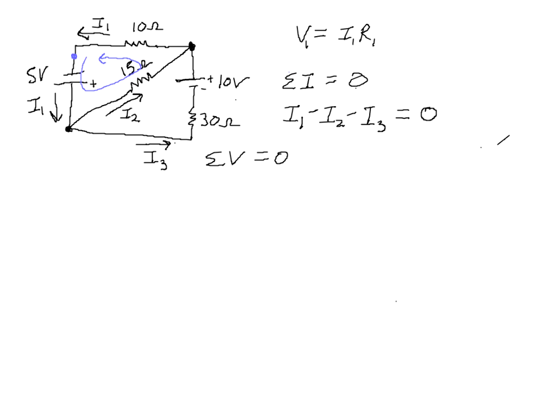So we're going to start there at the blue dot and go counter-clockwise. First, we go from the negative terminal of the 5 volt battery to the positive terminal of the 5 volt battery. That is a voltage increase of 5 volts. Then, we get to this 15 ohm resistor. We go over this resistor in the direction of the current I2. So that is a voltage decrease.